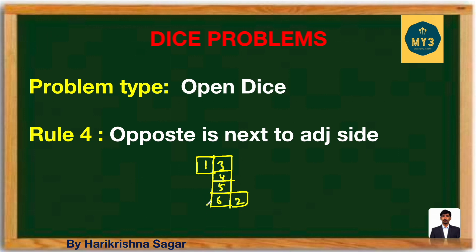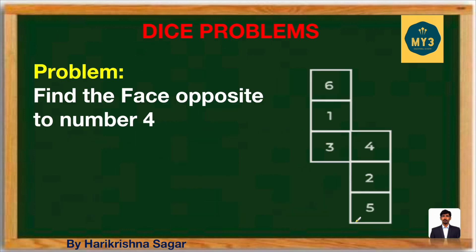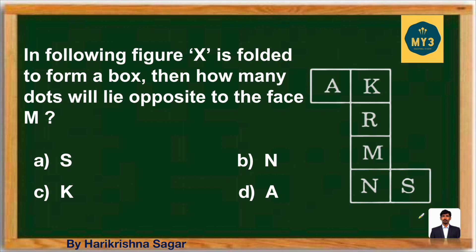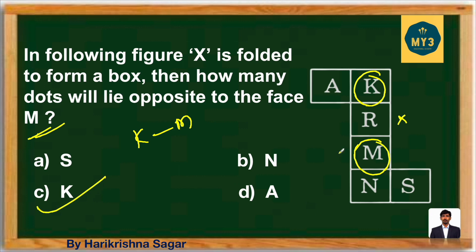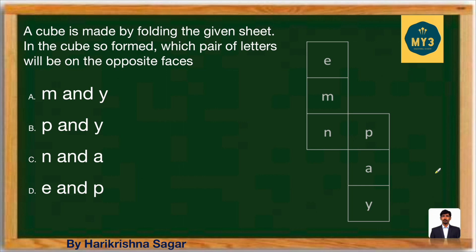For example: what is opposite to 3? Three is here — this is the adjacent layer, and next to adjacent is opposite, so 3 opposite is 5. What is opposite to 4? Four is here — adjacent layer is next, and next to adjacent is opposite, so 4 opposite is 6. And 1 opposite is 2. For another question: what is opposite to 4? Four is here, adjacent is next, next to adjacent is opposite — so 4 opposite is 5. What is opposite to face M? K is here, R is adjacent, opposite to K is M, so opposite to M is K.